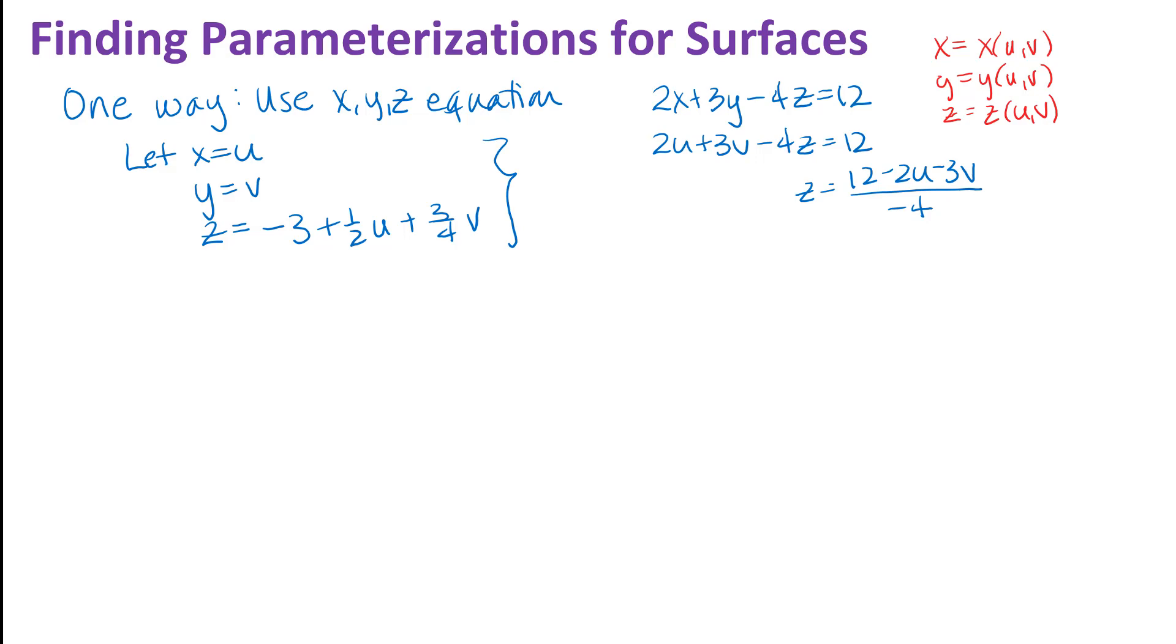And if I want the whole plane, I will let u go all the way from negative infinity to infinity and v go from negative infinity to infinity. So again, this parameterization is not unique. I can also parameterize that plane pretty easily by choosing to let y be u and z be v. So that would be another parameterization for the same plane and there's really infinitely many parameterizations of the plane.